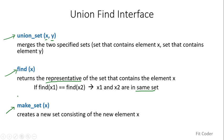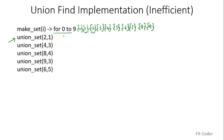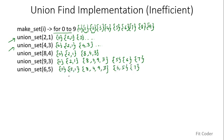For an example, we first call make_set for elements 0 to 9, creating 10 individual sets. Then we do union_set(2,1), merging them into one set. Then union_set(4,3), uniting 4 and 3. Then union_set(8,4), uniting 8 with the set containing 4. Then union_set(9,3), merging 9 and 3. Finally, union_set(6,5). At the end we are left with four sets.